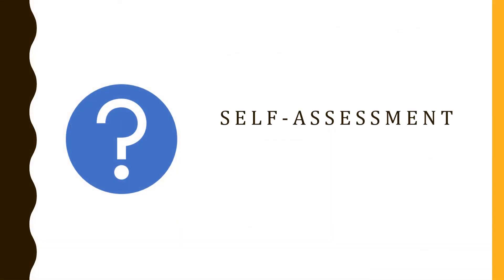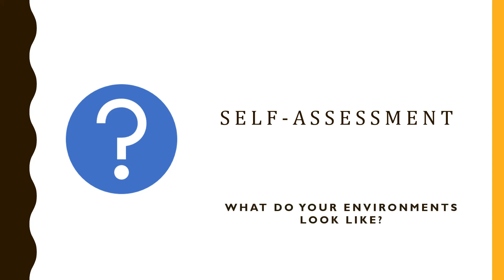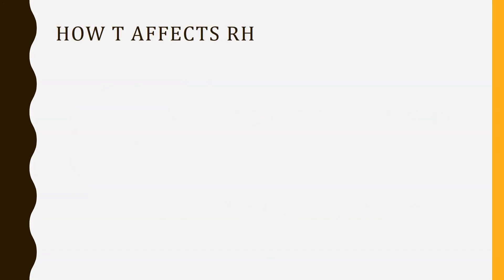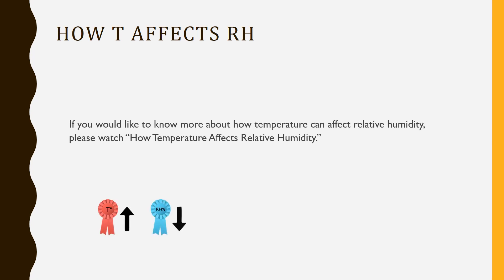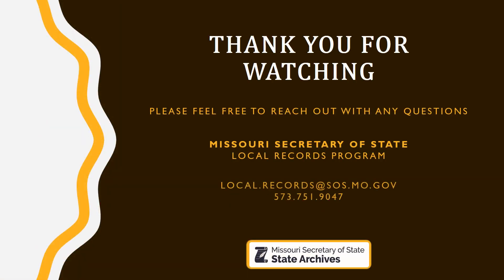A little bit of homework: check how your environments look. What object types are in your collections? What are their temperature and relative humidity preferences, and do they overlap? Are you using any tools to monitor the environment? If you're curious about how temperature can affect relative humidity, please watch 'How Temperature Affects Relative Humidity.' Thank you for watching, and feel free to contact us with any questions.